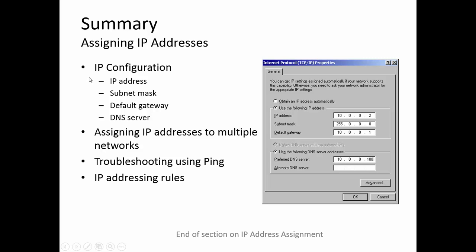In summary, we discussed IP configuration and the four key variables: IP address, subnet mask, default gateway, and DNS server. We looked at assigning IP addresses to multiple networks, at troubleshooting using ping, and at IP addressing rules. This concludes our section on IP address assignment.